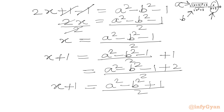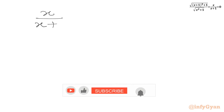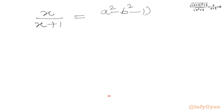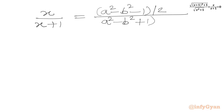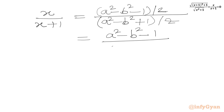Now we find x/(x+1). Dividing x by x+1, we get (a² − b² − 1)/2 divided by (a² − b² + 1)/2. Cancelling the 2s from the denominators, we get (a² − b² − 1) / (a² − b² + 1).